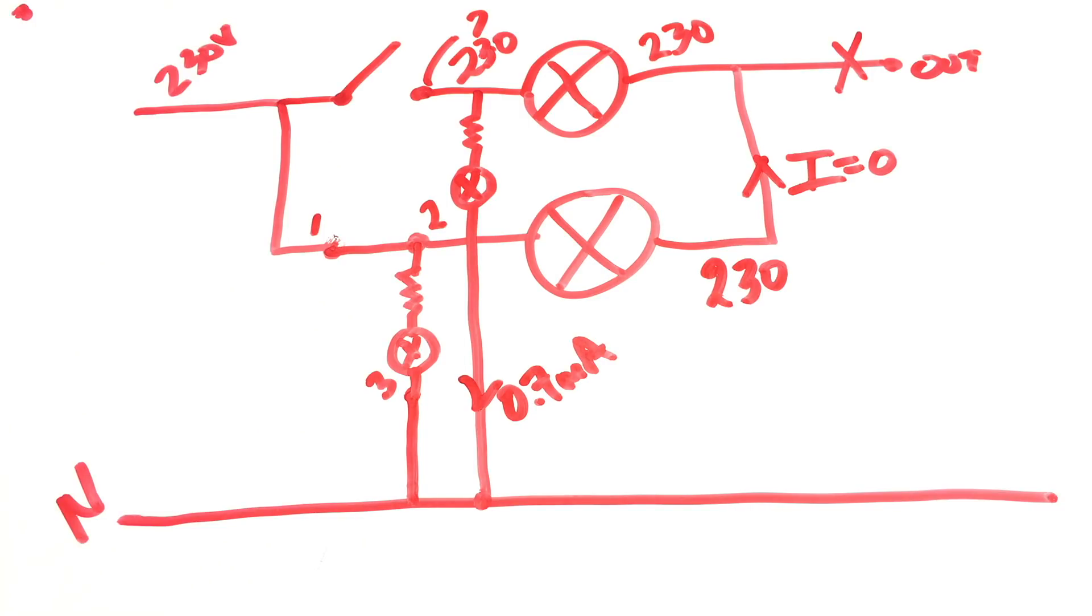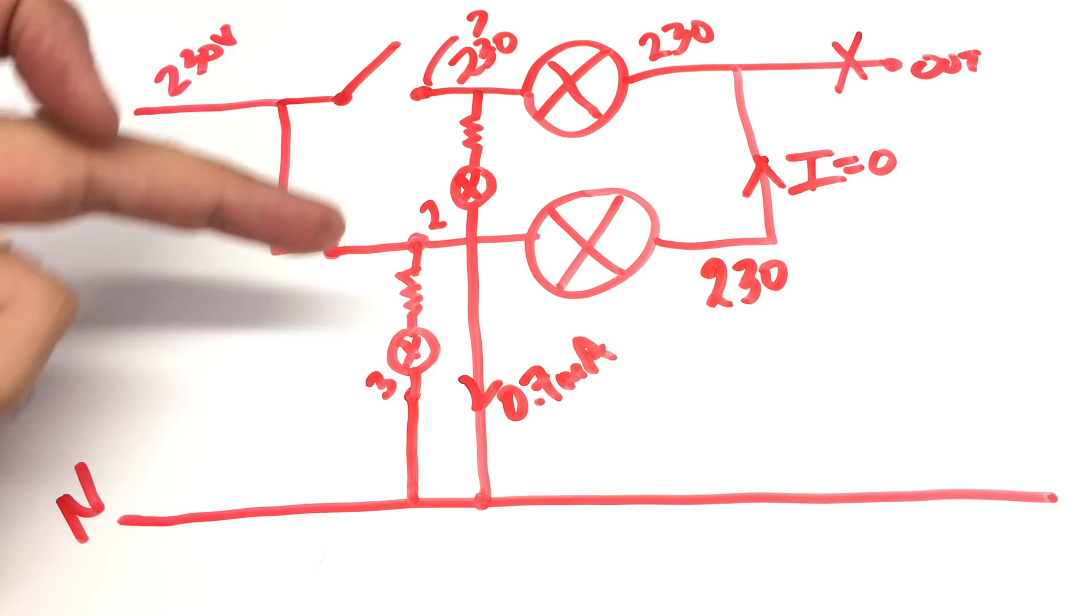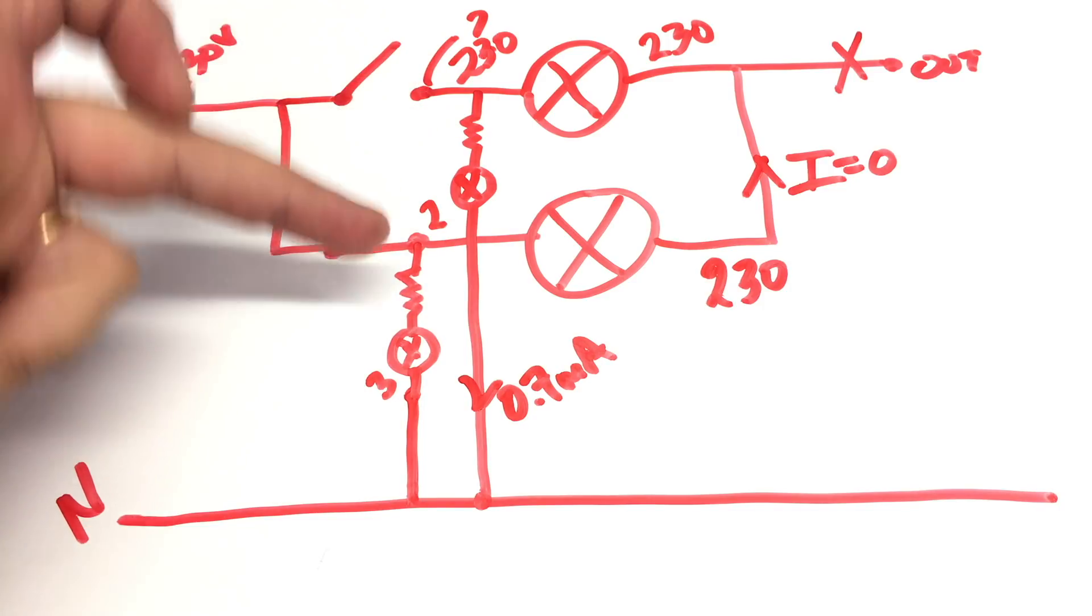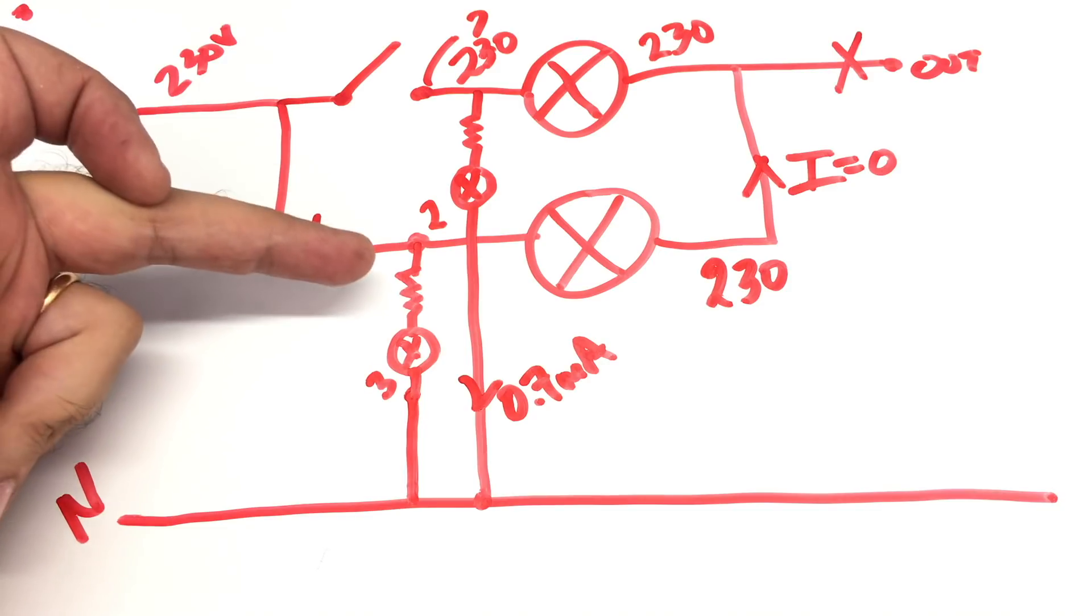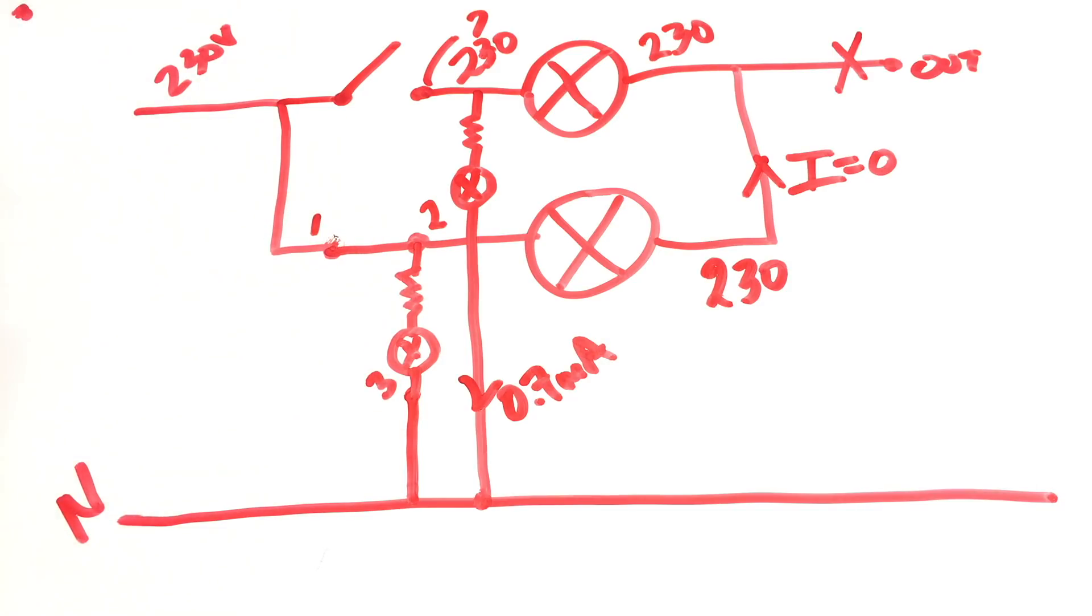I have no idea why that works. The only explanation I can find is that internal to that switch, it's not wired the way I believed it was. There may be a switching action as well. There must be a switching action as well. So effectively, this switch is a double pole internally.